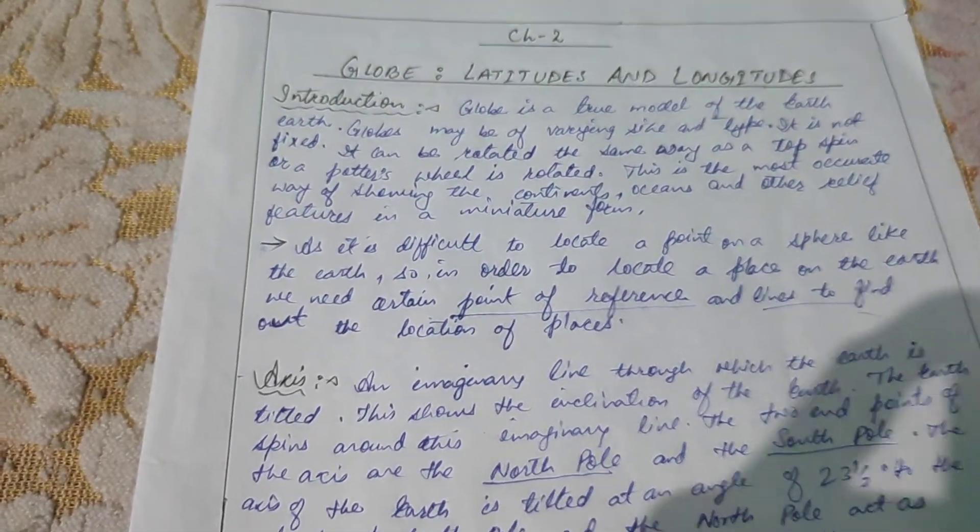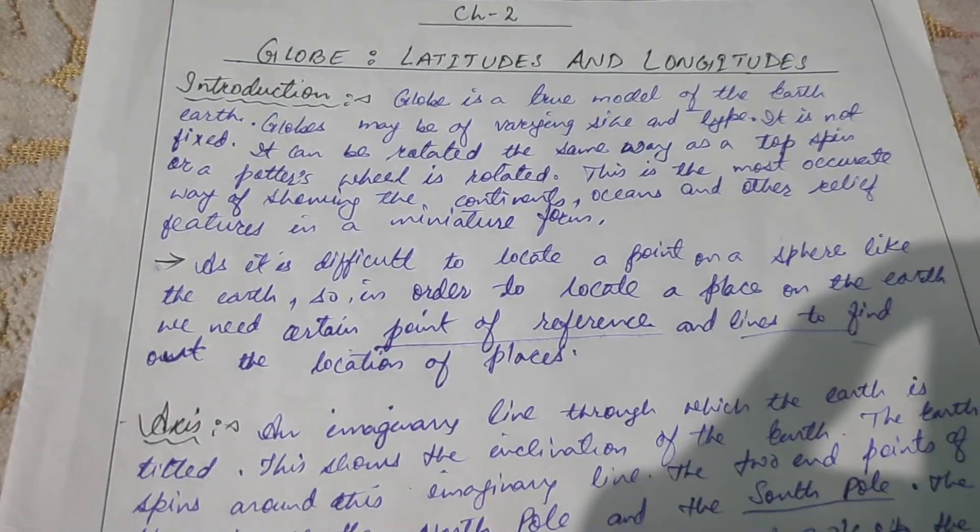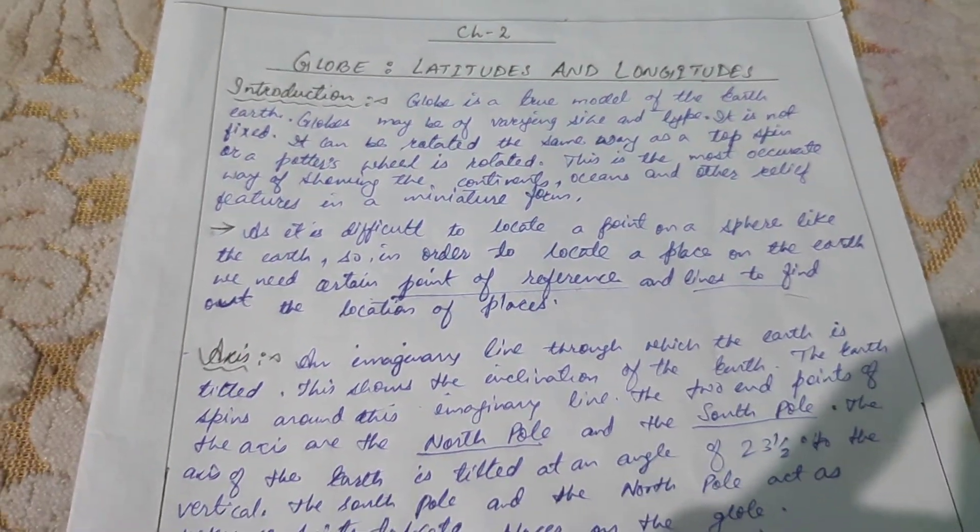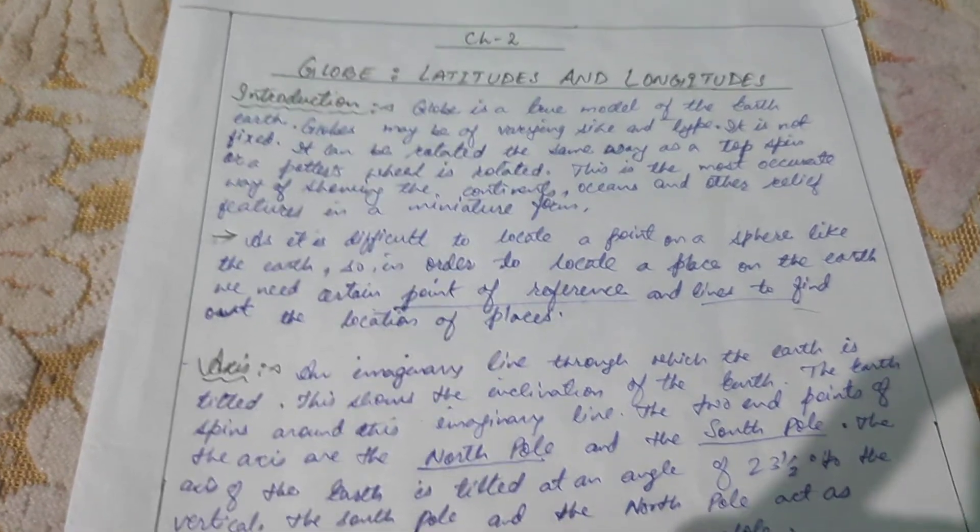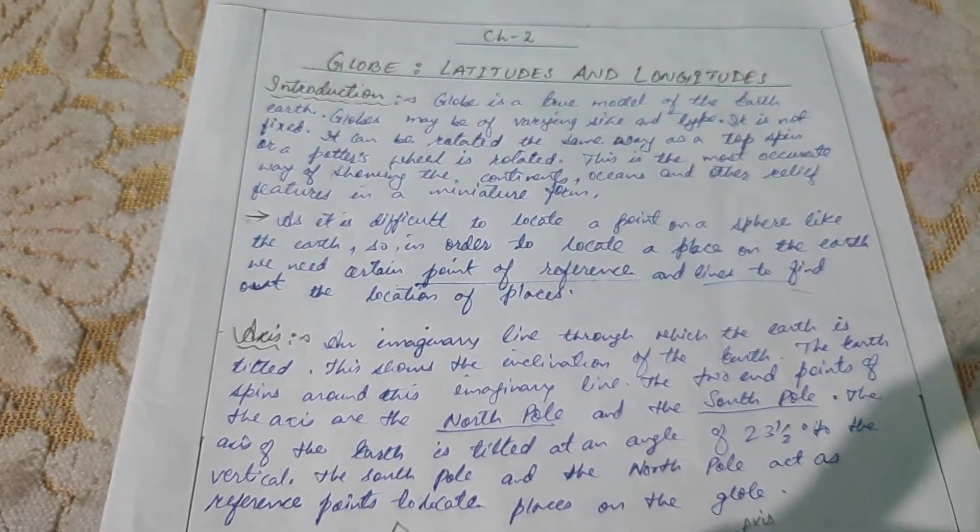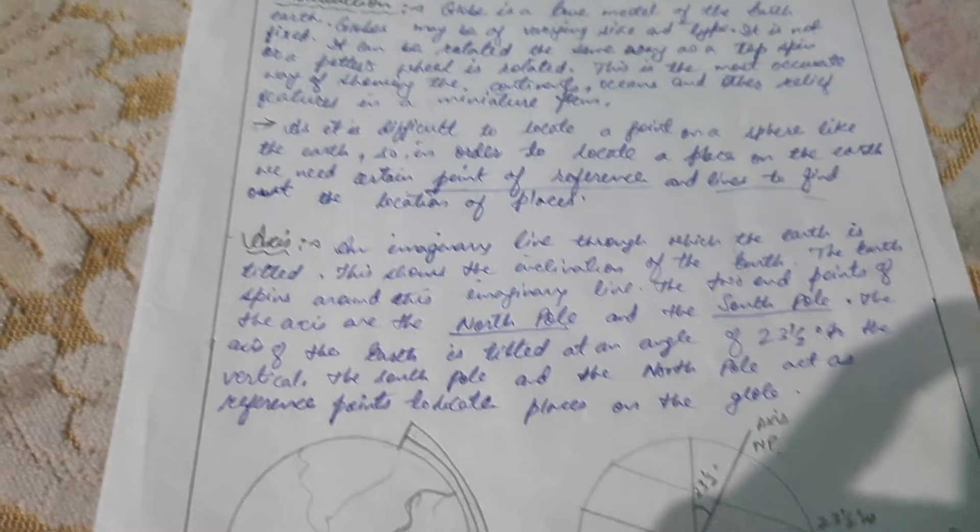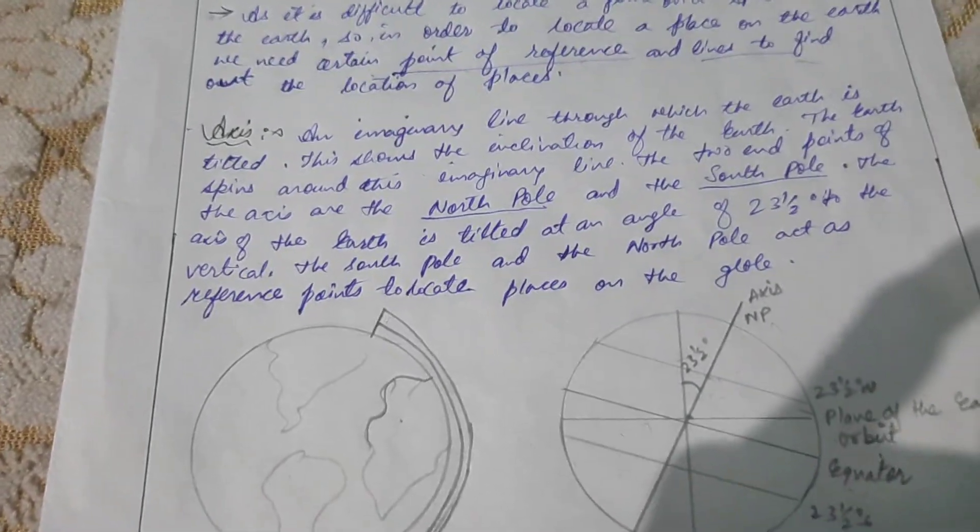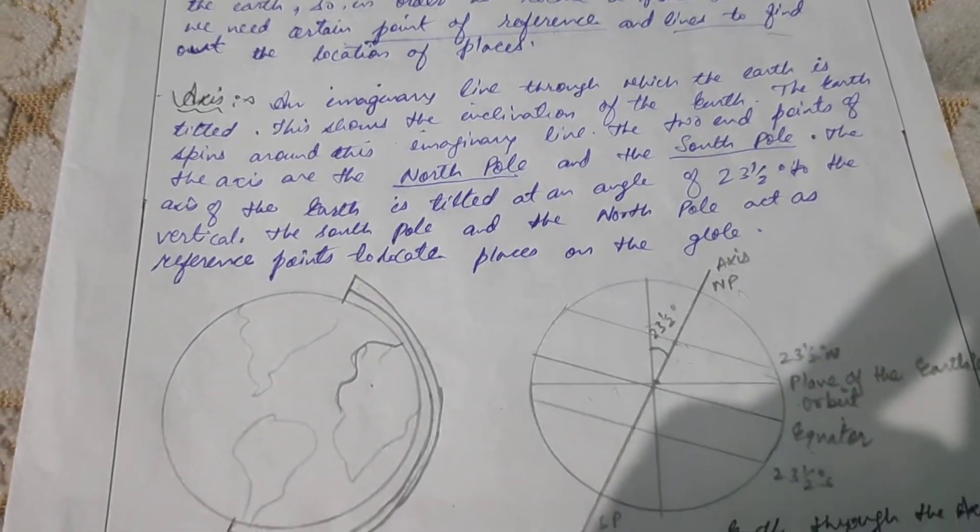As it is difficult to locate a point on the sphere like the Earth, in order to locate a place on the Earth, we need certain points of reference and lines to find out the location of place. And this point of reference we can get by knowing the axis. Let's discuss about axis.